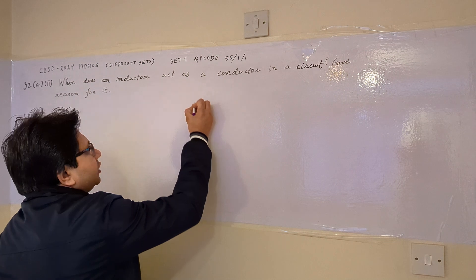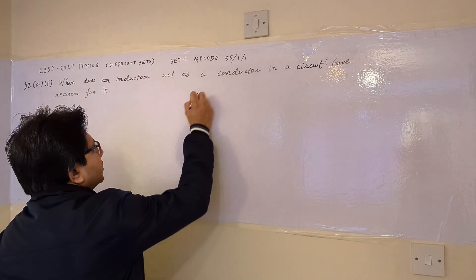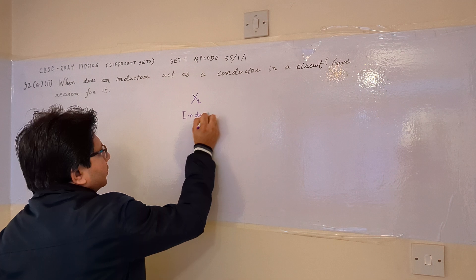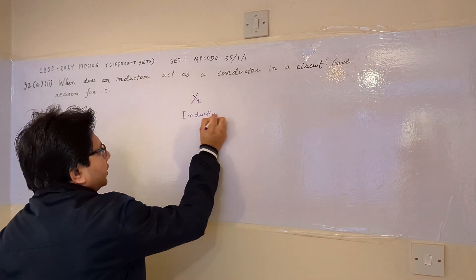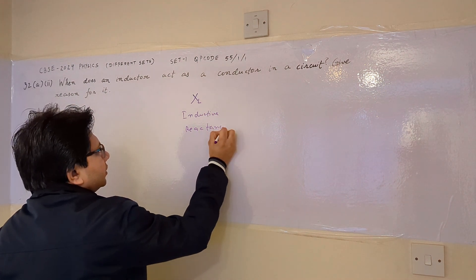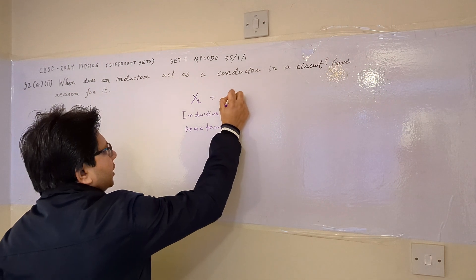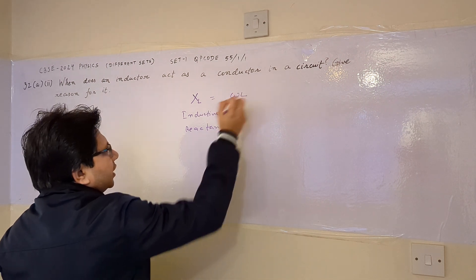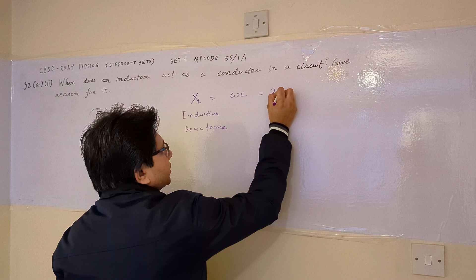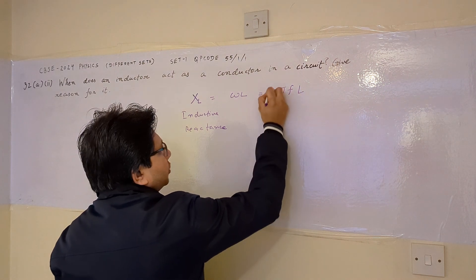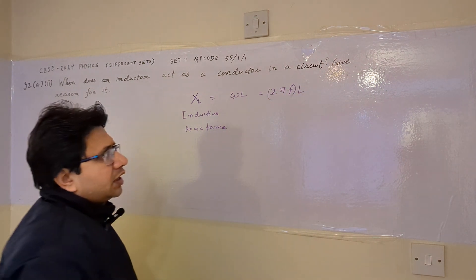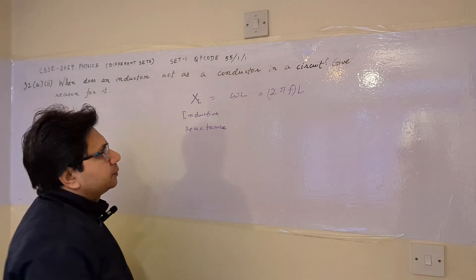We know that for an inductor, the inductive reactance X_L is given by ωL, where ω is the radian frequency. This can be written as 2πf into L, where ω is 2πf, and f is the frequency of the applied signal.